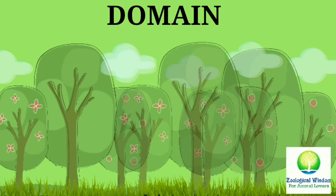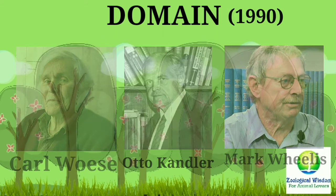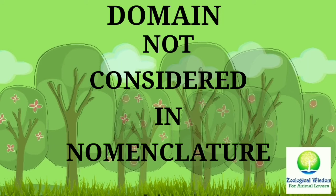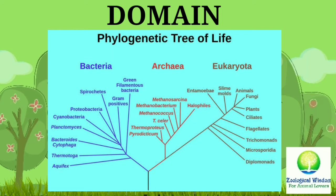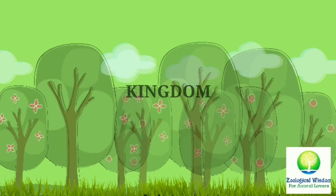The term Domain was proposed by Carl Woese, Otto Kandler, and Mark Wheelis in 1990. It is a 3-domain system but is not considered in any formal nomenclature. According to this system, the tree of life consists of 3 domains: Archaea, Bacteria, and Eukarya.